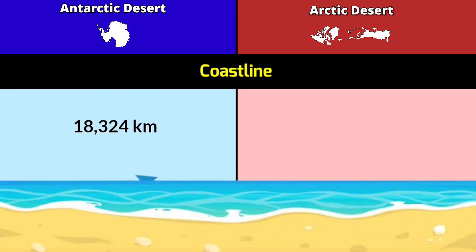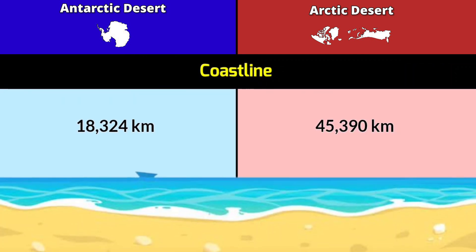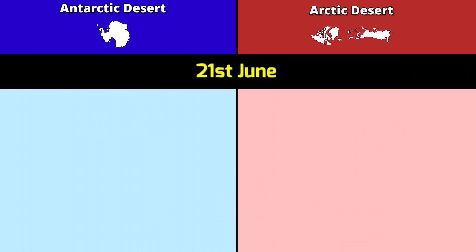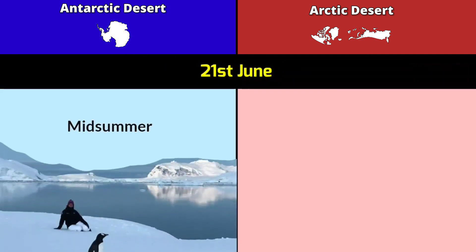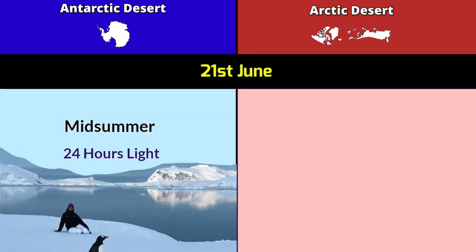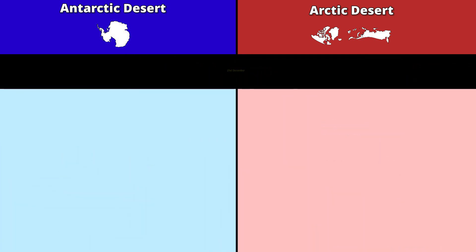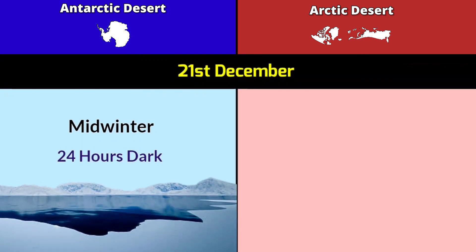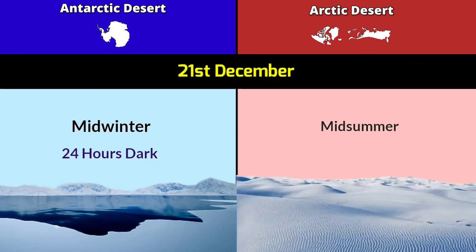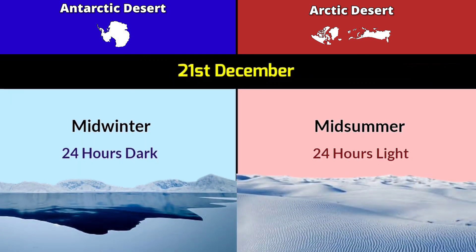Coastline: Antarctica Desert is 18,324 kilometers; Arctic Desert is 45,390 kilometers. On the 21st of June: Antarctica has midsummer with 24 hours of light; Arctic has midwinter with 24 hours of dark. On the 21st of December: Antarctica has midwinter with 24 hours of dark; Arctic has midsummer with 24 hours of light.